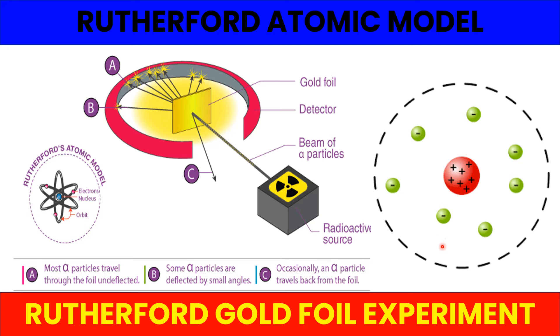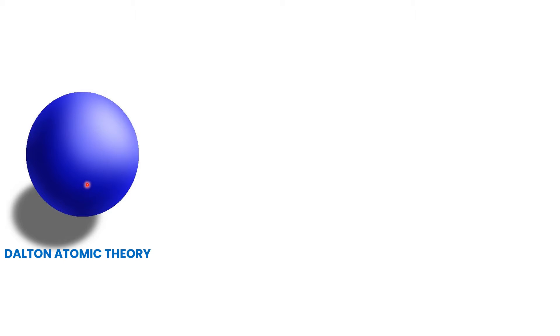In order to understand the Rutherford atomic model, it is very important to understand the previous atomic theories and atomic models. There were two previous atomic models which describe the structure of an atom. The first atomic model was known as Dalton's atomic theory. According to Dalton's atomic theory, the smallest particle of matter is known as an atom, and an atom is an individual particle that cannot be further cut down into smaller pieces.